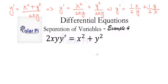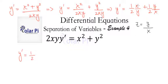Now we're going to do something pretty nice: we let z equal y over x. That allows us to write y' equals one-half times x over y, which is one over z, so one-half times 1/z, plus one-half times z.